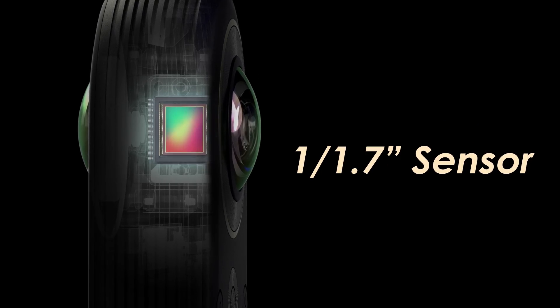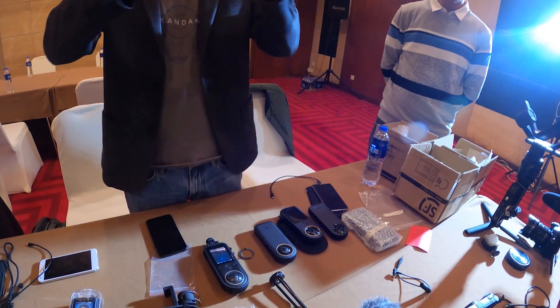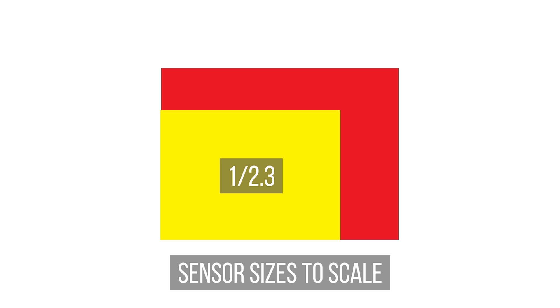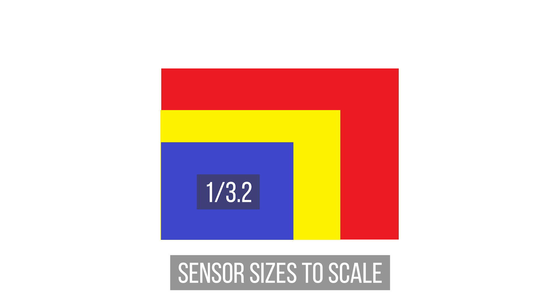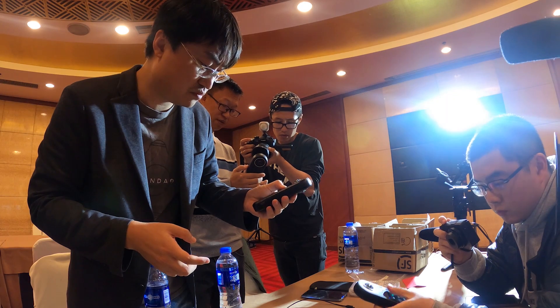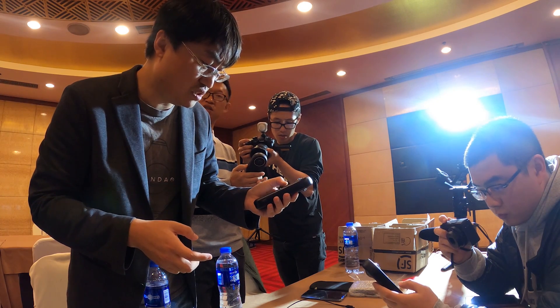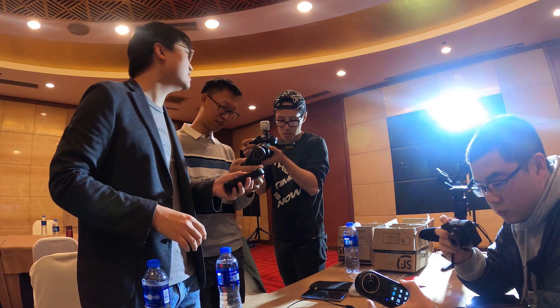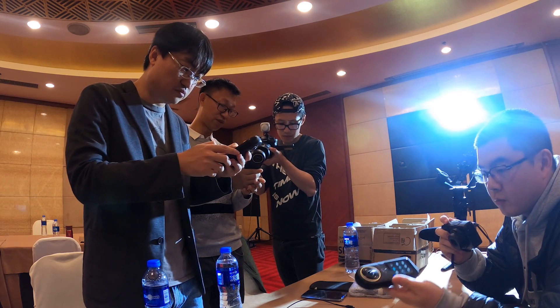The Qoocam 8K also features 1/1.7-inch sensors — those are huge. Regular 360 cameras use sensors that are either 1/2.3 inches or 1/3.2 inches. A 1/1.7-inch sensor is 54% larger than a 1/2.3-inch sensor and 279% larger than a 1/3.2-inch sensor. The Qoocam uses H.264 or H.265. The bit rate in H.265 is 200 Mbps, but to achieve that bit rate you'll need to use a V30-rated micro SD card.